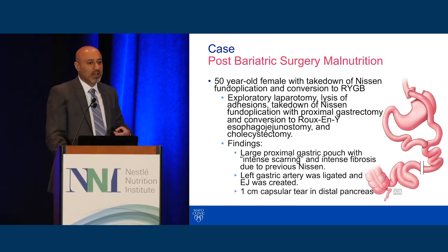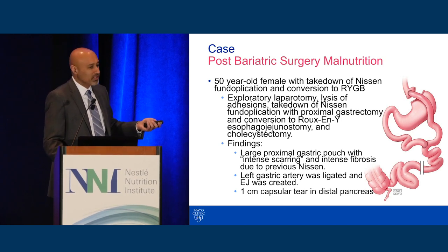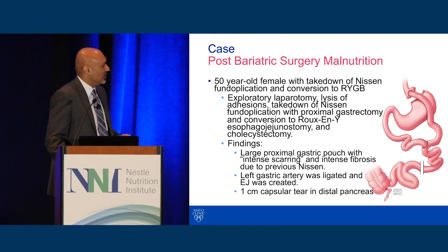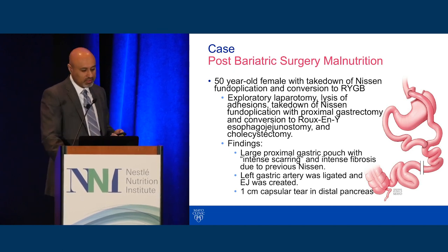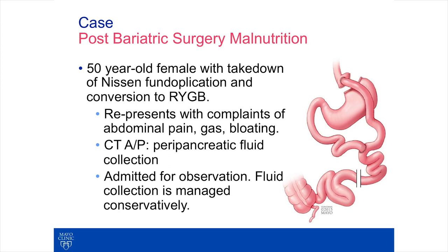Based on these findings, they took her back to the OR and revised the procedure. However, they found a lot of scarring from the Nissen fundoplication and essentially had to do an esophagojejunostomy—they couldn't create a gastric pouch again. But unfortunately that didn't solve the problem; she continued to have abdominal pain, gas, and bloating. A CT was done and found some injury to the pancreas during the operation with a small fluid collection, so she was admitted for observation. There was no sign of infection and it was managed conservatively, but she kept having abdominal pain and symptoms.